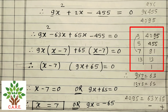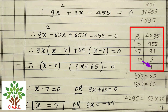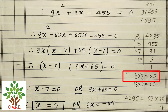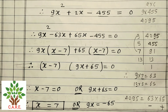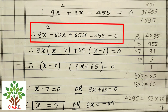Finding factors: a × c = 9 × 455 = 4095. We need factors of 4095 such that their difference gives the middle term. Using 65 and 63: 13 × 5 = 65 and 9 × 7 = 63. So the equation becomes 9x² − 63x + 65x − 455 = 0.